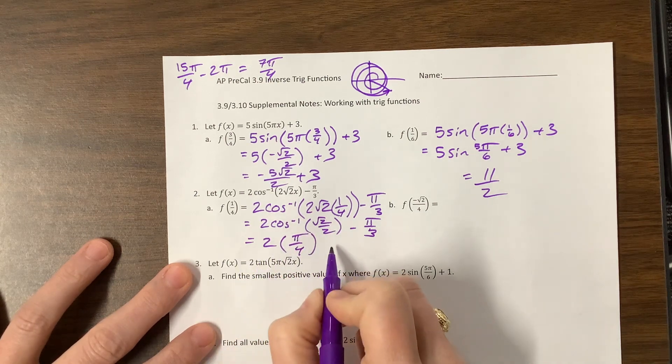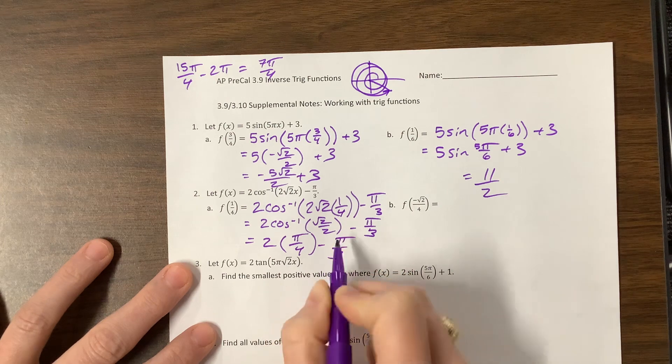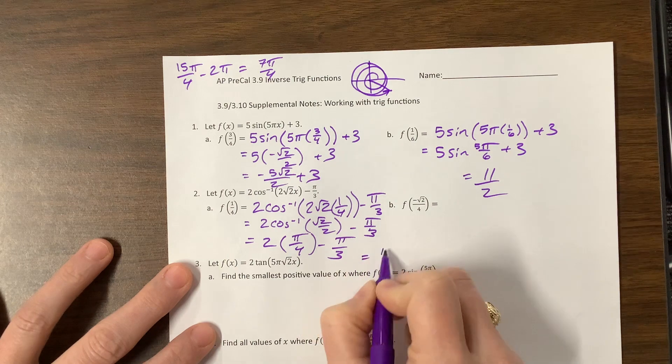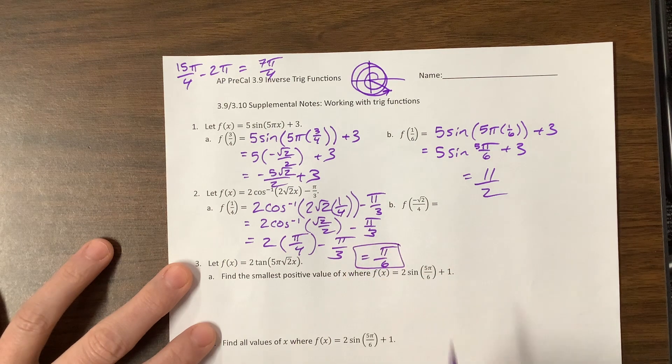It's 2 times cosine of √2/2 is π/4. So this is π/2 minus π/3. That's 3π/6 minus 2π/6, gives me π/6 as an answer.